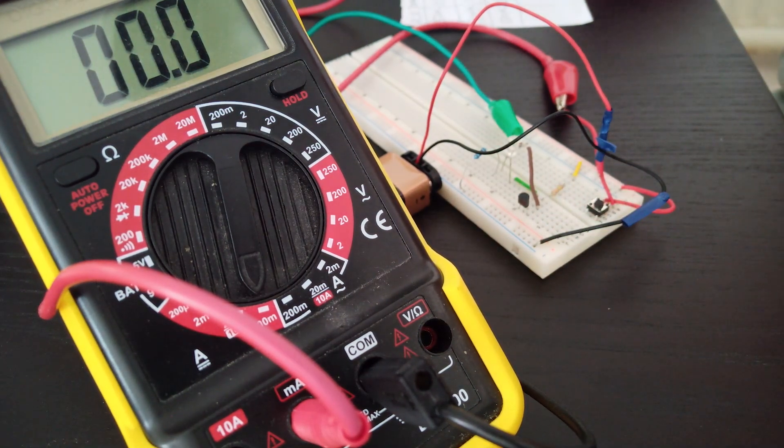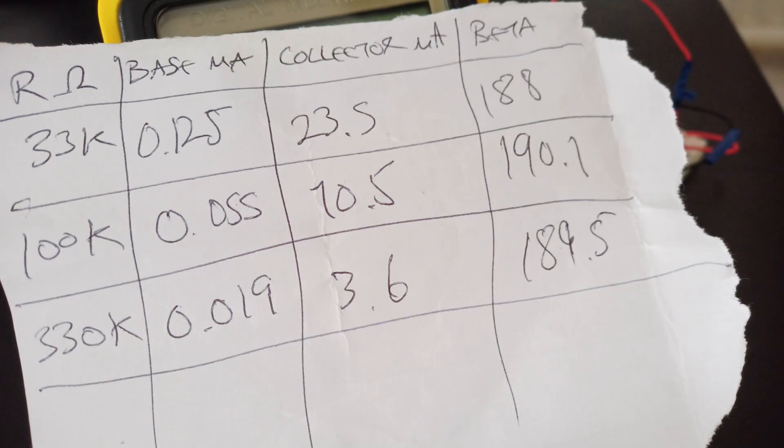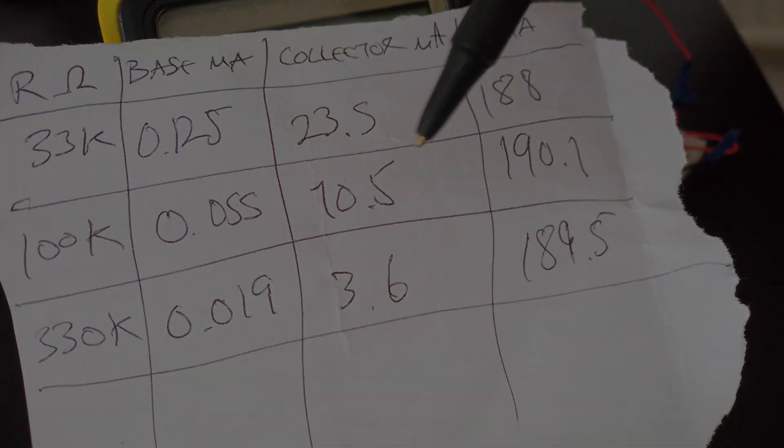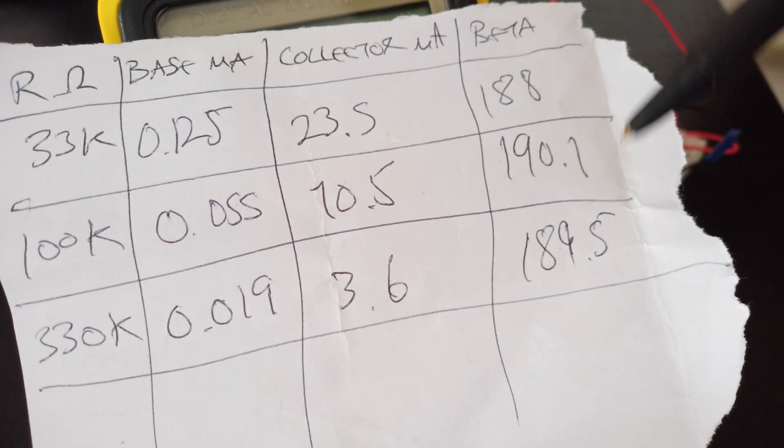Okay, so now what I'm going to do is just do a quick calculation to see what amplification factor we've got for each of those three tests. So if you can read my scrawl, this is what we got. The amplification factor for the 33k was 188, it was 190.1 for the 100k, and it was 189.5 for the 330k. Given how close those figures are to each other, that does indicate a very linear response in terms of amplification.